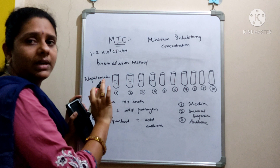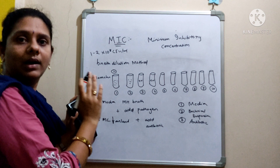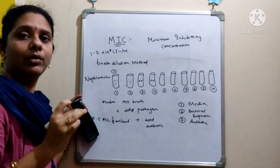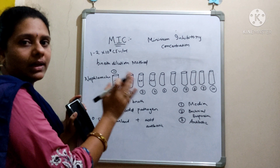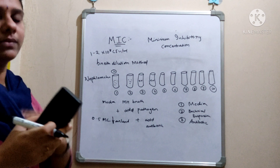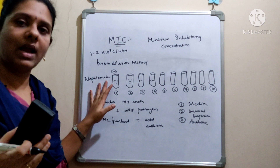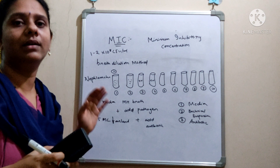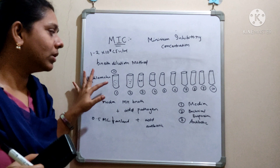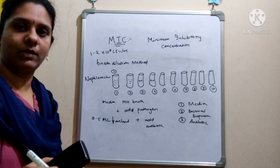In the first tube, leave it without any antibiotic, because you need to maintain a control when performing any experiment — it is mandatory to include controls. So the first test tube is the control: bacteria added without any antibiotic. When kept for incubation under suitable conditions, the bacteria will utilize the nutrients in the medium, undergo division, and the next day you will observe turbidity — indicating the growth of the organism.